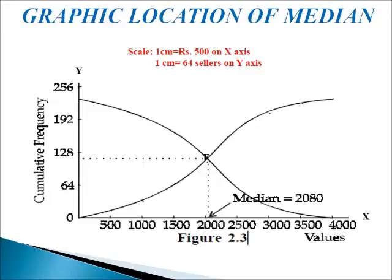We write the heading: Graphic Location of Median. The scale is 1 cm equals Rs 500 on the X axis, and 1 cm equals 64 sellers on the Y axis. We draw both Ogives — less than and more than — from the data calculated previously. From the point of intersection of the two Ogives, we draw a line parallel to the Y axis. The point where the line cuts the X axis is the median value. From point E, a perpendicular is drawn to the X axis.